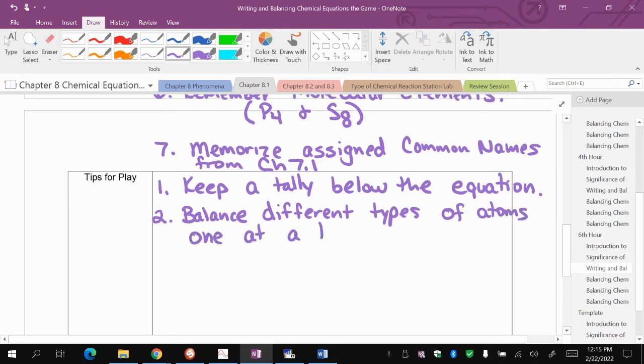It can be overwhelming when you're trying to balance a chemical equation. You see, I've got this hydrogen, I've got this copper, I've got this nitrogen. You need to just pick one type of atom and balance that. Don't try to balance everything at once. You have a tally so you won't forget anything.